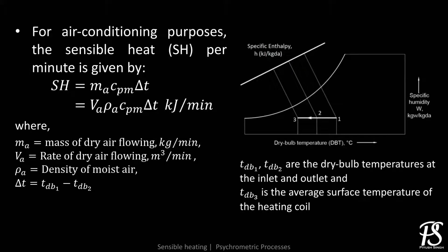Similarly, the heat removed per unit time can be calculated by multiplying the mass flow rate with the specific enthalpy change. Here are a few expressions for the same.